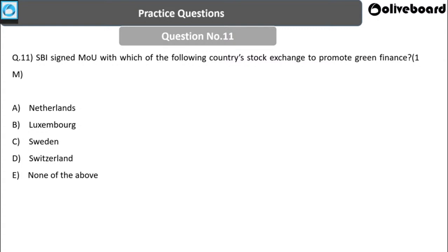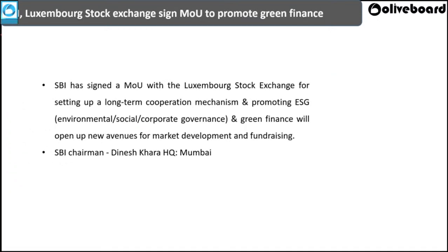Next question: SBI signed an MoU with which country's stock exchange to promote green finance? Options: Netherlands, Luxembourg, Sweden, Switzerland, or None of the above. The answer is Luxembourg. Luxembourg's stock exchange recently signed a Memorandum of Understanding with SBI to promote green finance mechanisms, focusing on a long-term cooperation on environmental, social, corporate governance, and green finance.